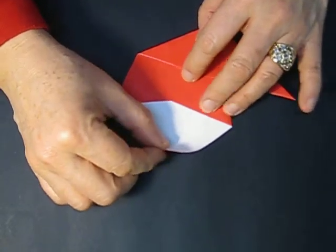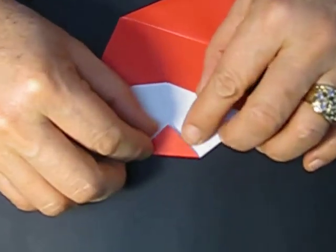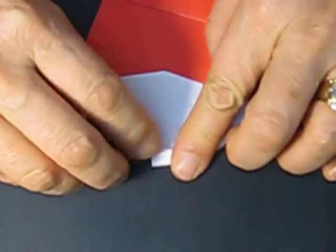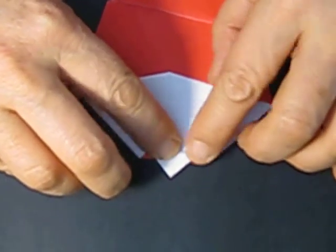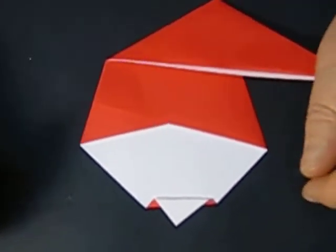The bottom part to make the mustache. Fold up and down to show some mustache. Make it in the middle. That's it for the Santa's head.